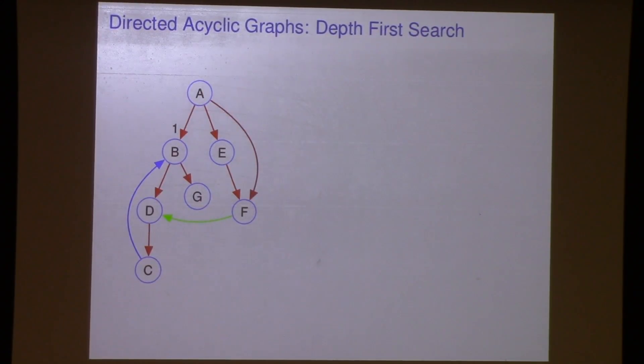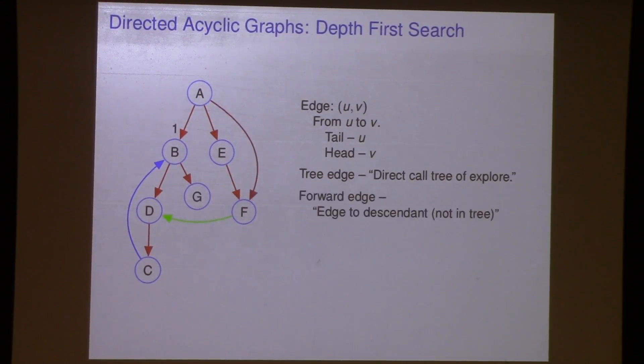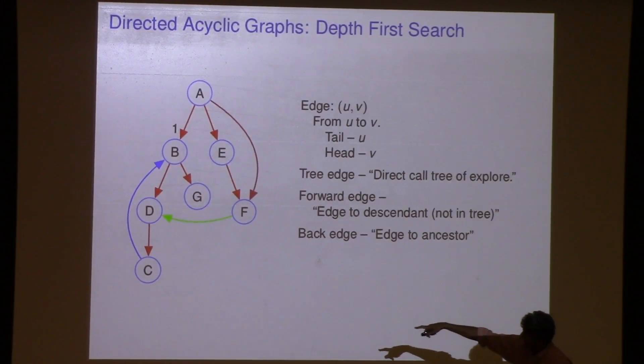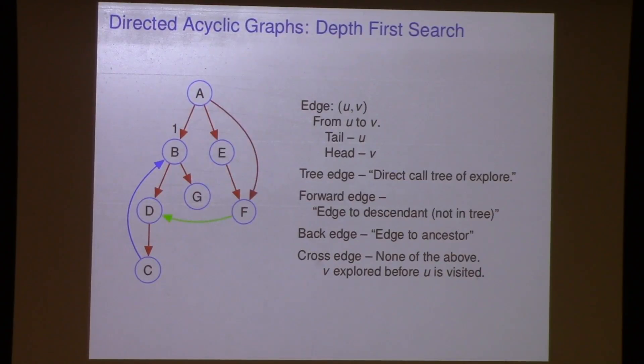I redrew it. These are again the edge from U to V. There's a tail, there's a head. The tree edges are direct call. It's just the call tree of Explorer. It's how we get intuition. The forward edge is a, here's a forward edge from A to F, edge to the descendant. The back edge. You see the back edge? Anybody see a back edge? Yeah, from C to B. It's an edge to an ancestor. So it differs from a forward edge. It's from an ancestor to a descendant. This is from a descendant to an ancestor.